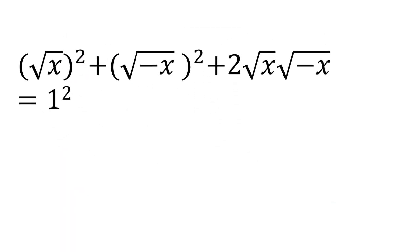So applying that formula, we get (√x)² plus (√(-x))² plus 2√x times √(-x) equal to 1.